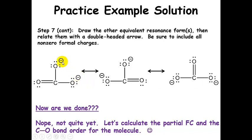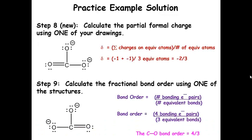Notice we have all of our non-zero formal charges on the structure. This collection of three equivalent resonance forms fully describes the bonding in the carbonate ion. But our problem also asks us to calculate the partial formal charge and the carbon-oxygen bond order, so we're not quite done.